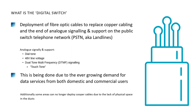Fiber is being deployed in place of copper due to our ever-growing demand for data services. Copper is a poor medium for carrying data, whereas fiber optic allows much greater speeds. This is being done for both domestic and commercial demand, as we see a change from voice being the most important layer to data. Additionally, some areas can no longer physically deploy copper cables due to a lack of space in the ductwork.